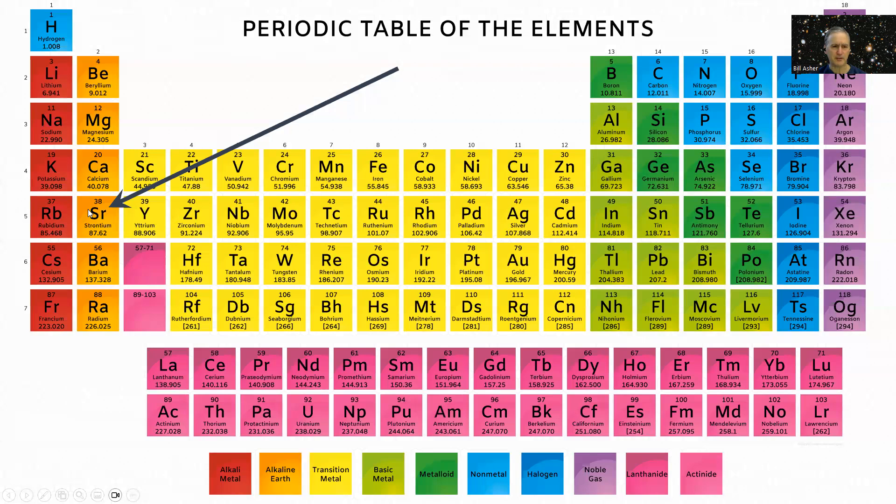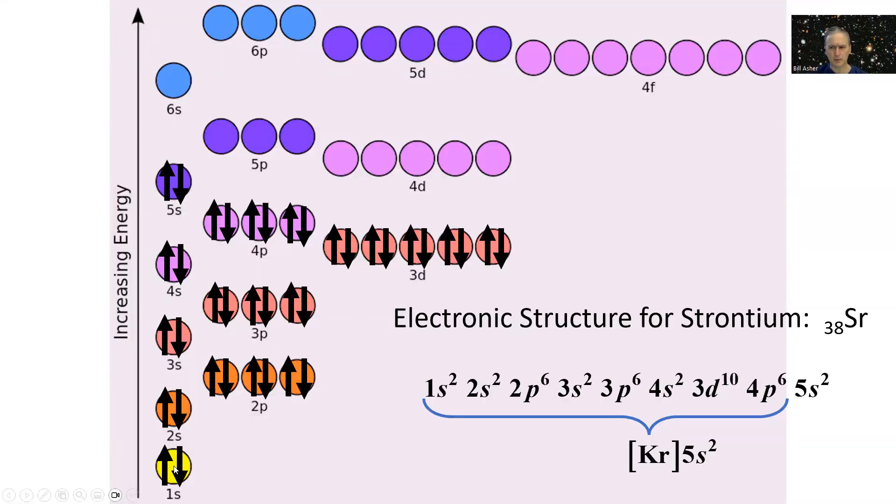Strontium, down here in period five, in group two, has an atomic number of 38, meaning it has 38 total electrons. If you look over here, krypton is the noble gas right above it with 36 electrons. If we draw the electronic structure of strontium, we're going to fill in two electrons. So that's 38 total electrons.